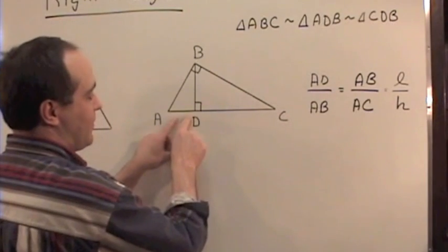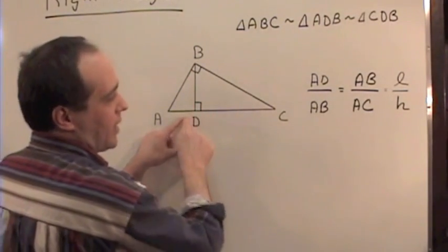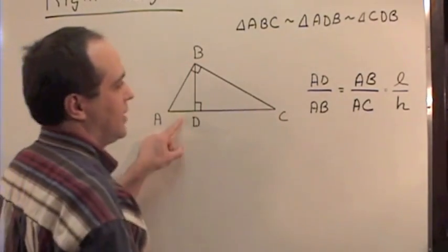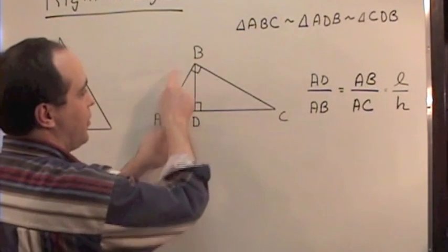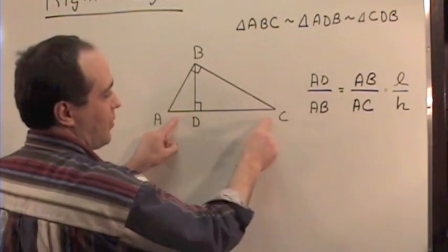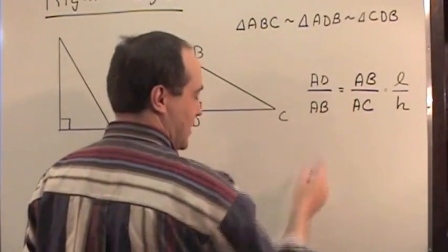We see that AD, the length of the leg down here of this little small triangle, divided by AB, its hypotenuse, is equal to the proportion of AB, which is the leg of the big triangle, divided by its hypotenuse AC. So AD is to AB as AB is to AC.